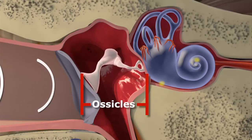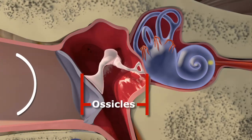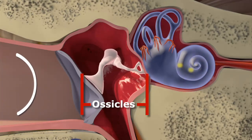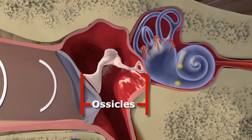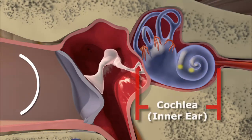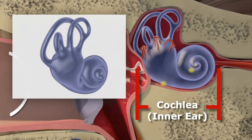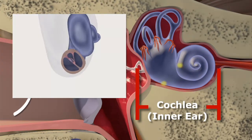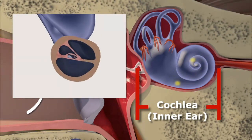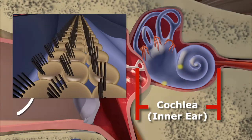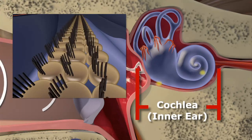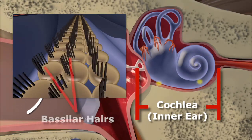These amplify the mechanical energy, which is transferred to the inner ear through the oval window of the cochlea. The ossicles tap on the oval window, causing vibration of the fluid in the inner ear, and this movement passes through the fluid-filled cochlea. In the cochlea are millions of hair cells called basilar hairs.